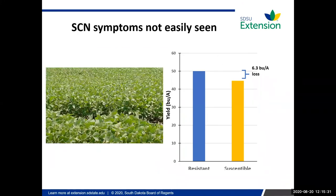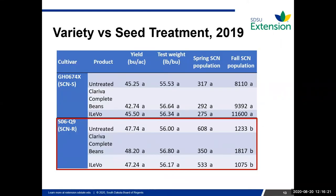In a field where you don't easily see symptoms — a pretty uniform stand, everything nice and green, no stunting — you may still see yield loss on the yield monitor. When comparing a resistant line versus a susceptible line in this scenario, the resistant had about 50 bushels per acre whereas the susceptible was about 44 bushels per acre — about a six bushel per acre loss, roughly a 12 percent yield loss, all without seeing any symptoms out there.